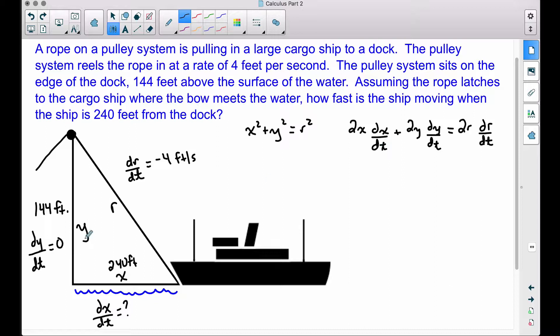However, recall we said that this Y piece here, dY/dt, is going to be equal to 0. So if we plug 0 into this spot, it's going to knock out this entire term, which is very helpful because it just eliminates part of our problem. That leaves us with 2X dX/dt is equal to 2R dR/dt.